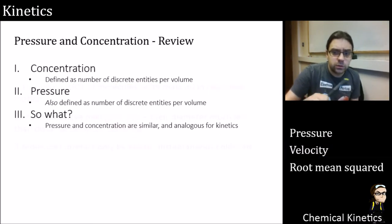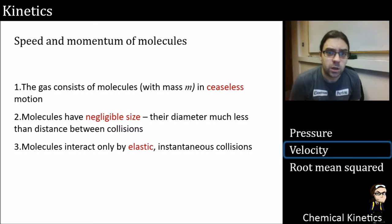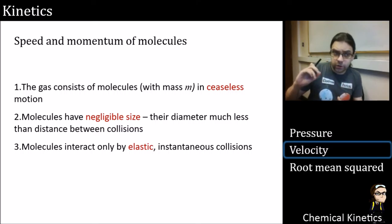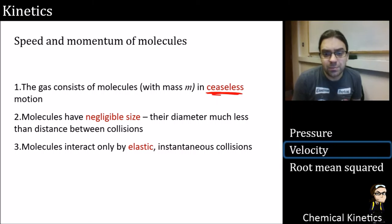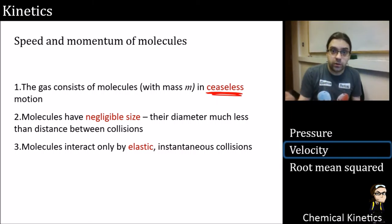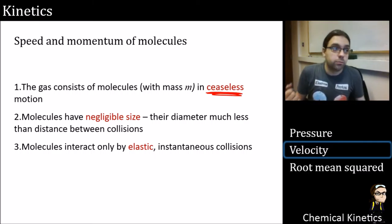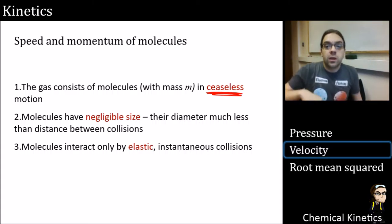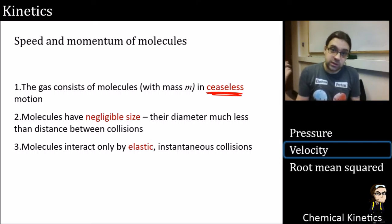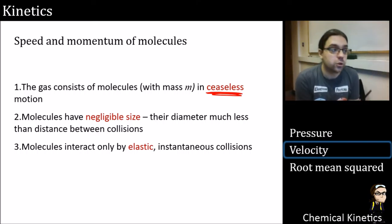Let's move to speed and momentum of molecules. I'm going to cover a few assumptions we make in kinetic theory of gases. First: a gas consists of molecules in ceaseless motion — they don't stop; they just wander around. You might think they'd slow down due to air resistance, but on a molecular scale the molecules themselves are the air, and air resistance is a kinetic collision effect. Without a collision, they just keep travelling without stopping.